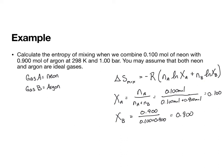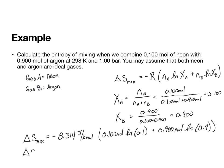So now it just becomes a process of plugging and chugging. And so delta S of mixing is going to be equal to negative 8.314 joules per Kelvin mole times 0.100 moles times the natural log of 0.1 plus 0.900 moles times the natural log of 0.9. And if we plug this into our calculator, we get that the delta S of mixing is a positive 2.70 joules per Kelvin.